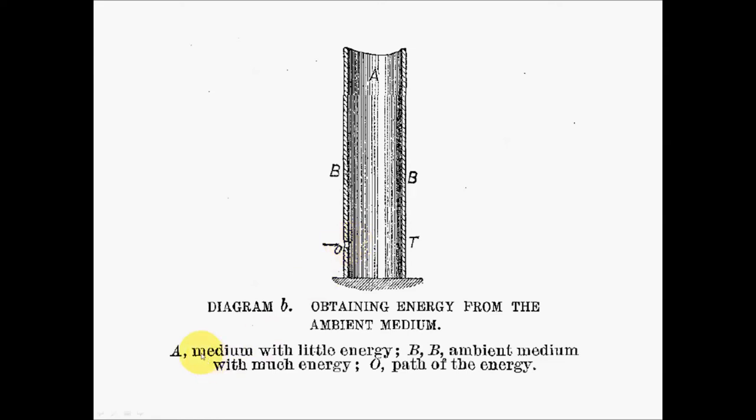He's labeled A as a medium with little energy, or perhaps low pressure. B is the ambient medium with a lot of energy, the liquid or pressurized gas outside the tube. And then O is the path of the energy, whatever matter is going to flow from the high pressure to the low pressure coming through the tube T.